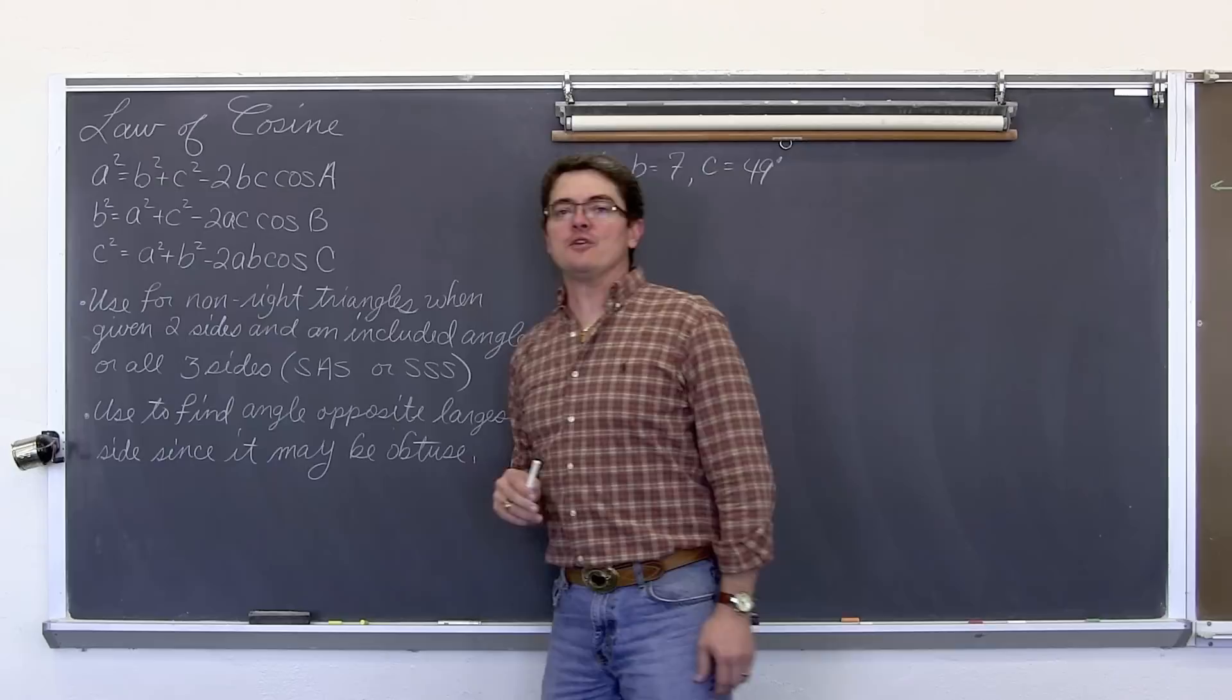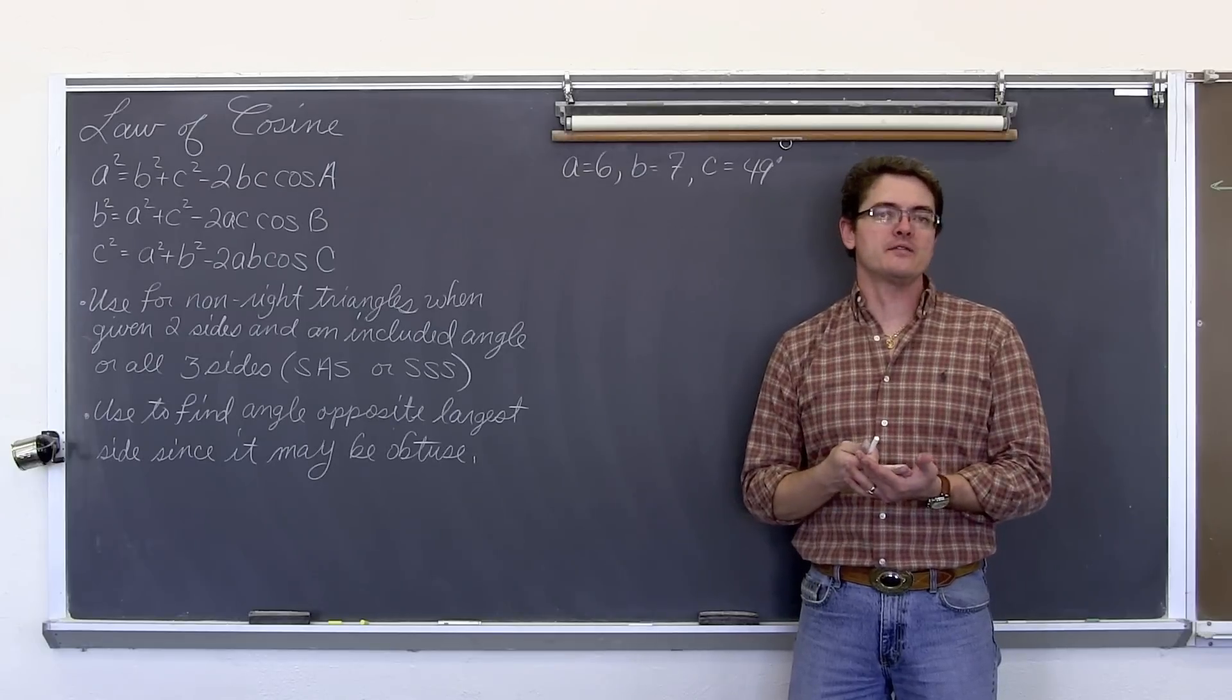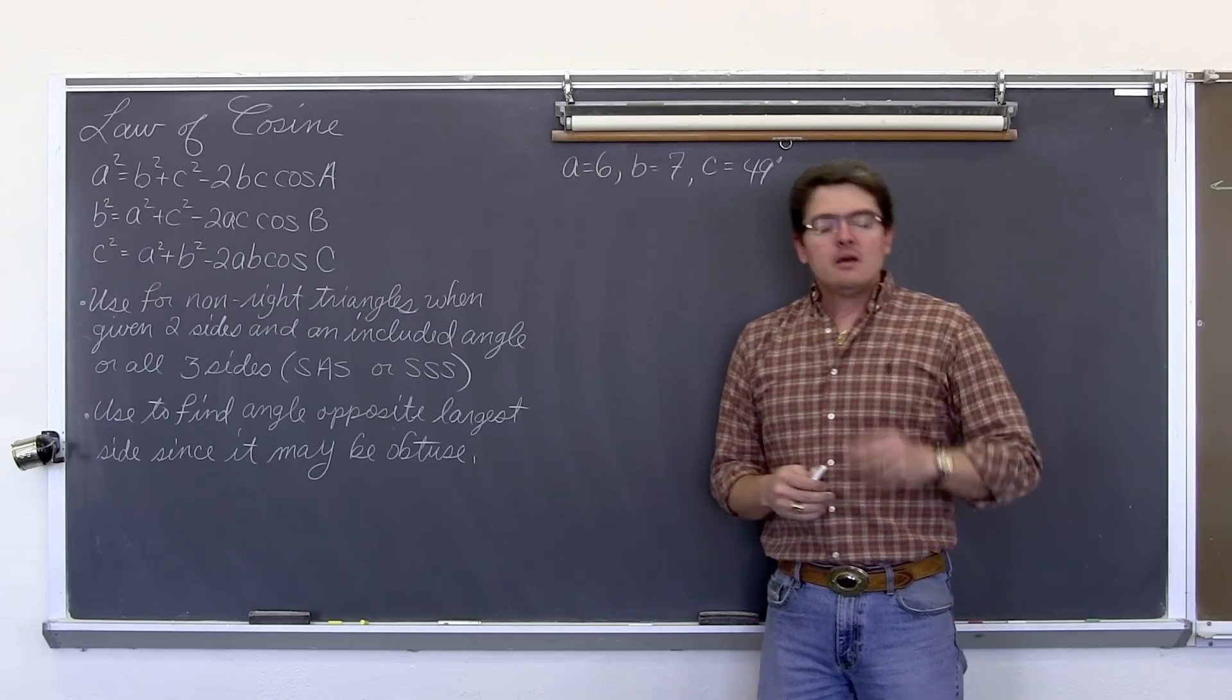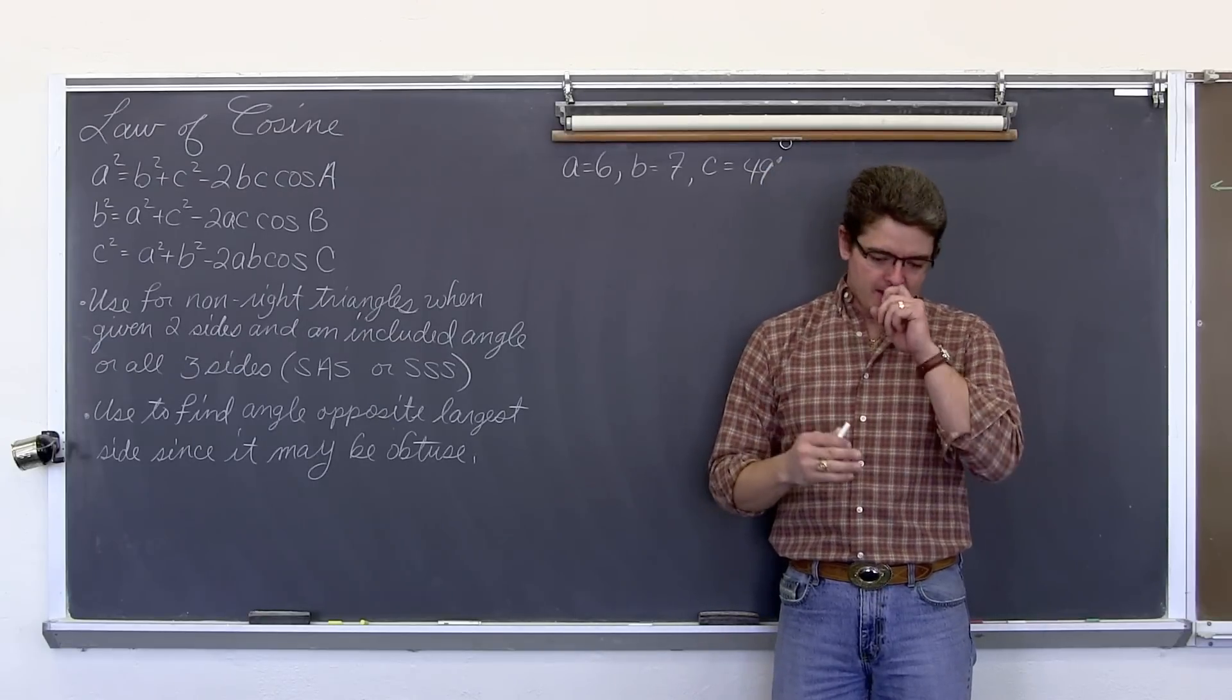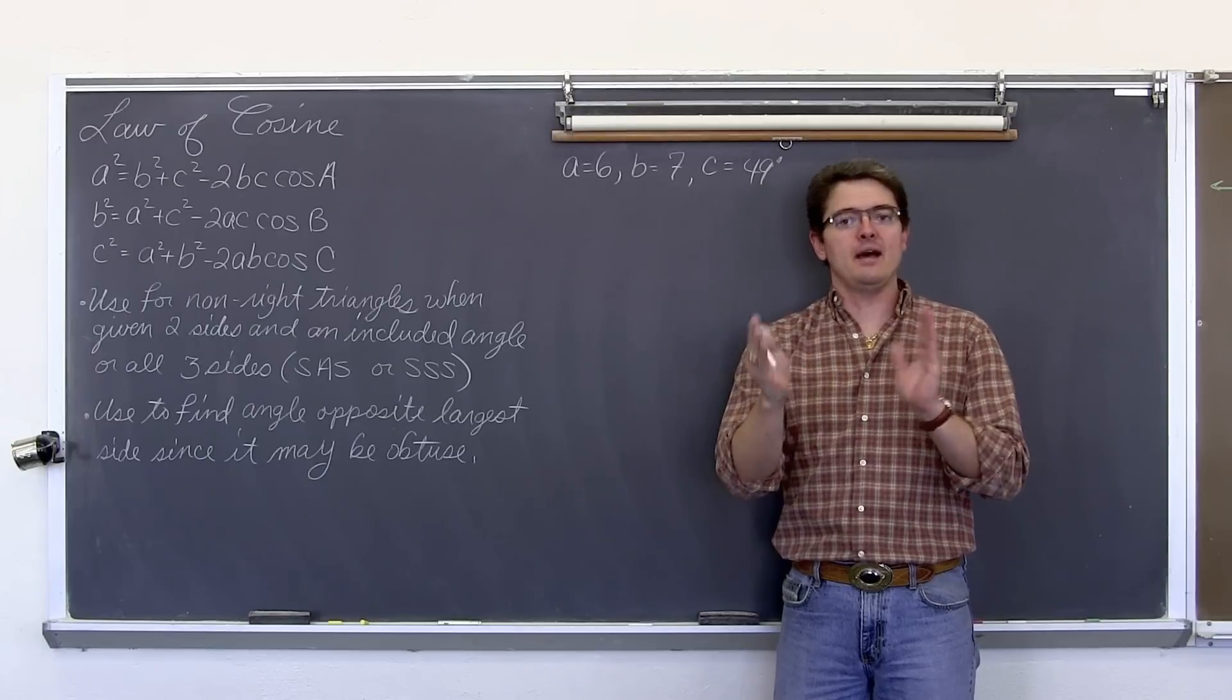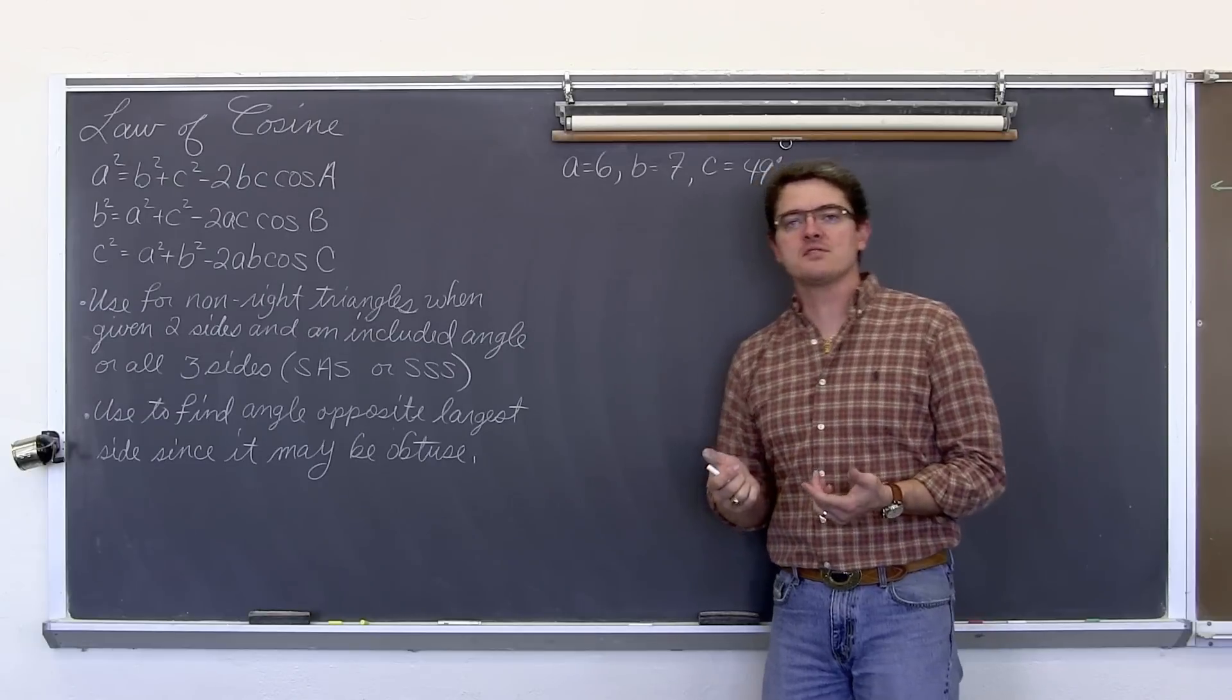That is the law of cosine. Now we need both of these laws because you can't always do law of sine and you can't always do law of cosine. To be able to set up the law of sine you need to have a matching pair of angle and side. When you have that pairing like you know angle A and side A you can set up the law of sine.